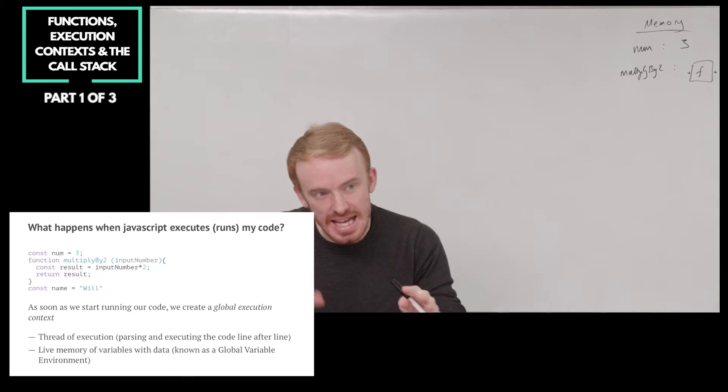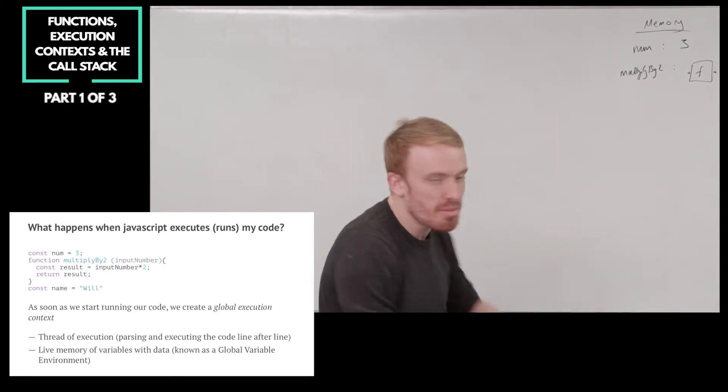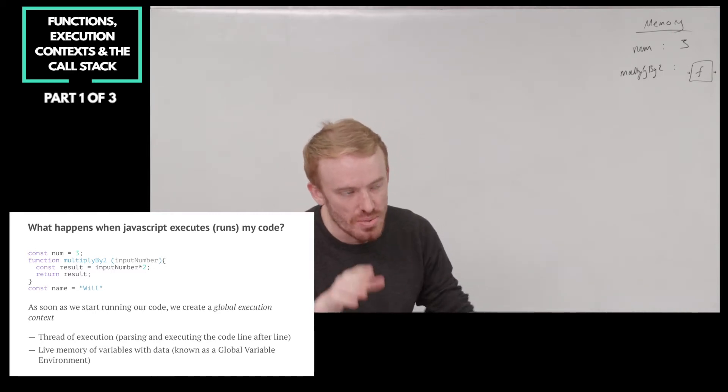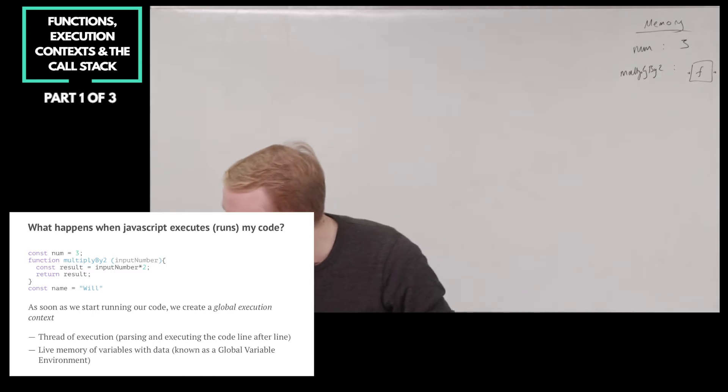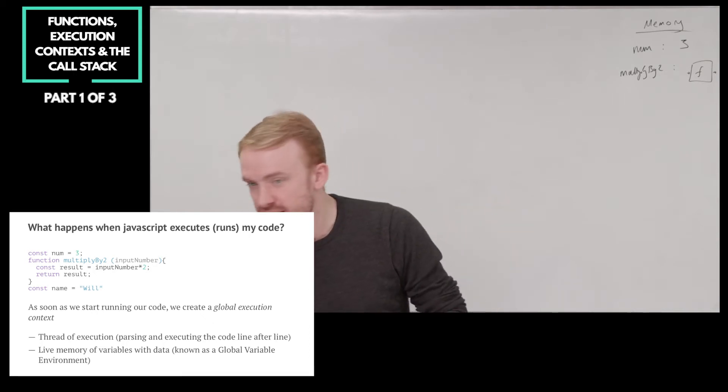It's going to grab that label, multiplyBy2. It's going to grab that label and it's going to use that as a label for all the functionality, the whole function definition, the whole set of instructions from the keyword function to the end. And it's going to capture that and store it under the label multiplyBy2. Alright. Next line, Skyler.